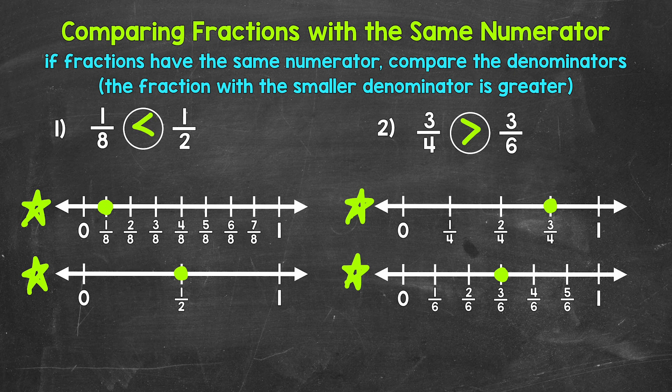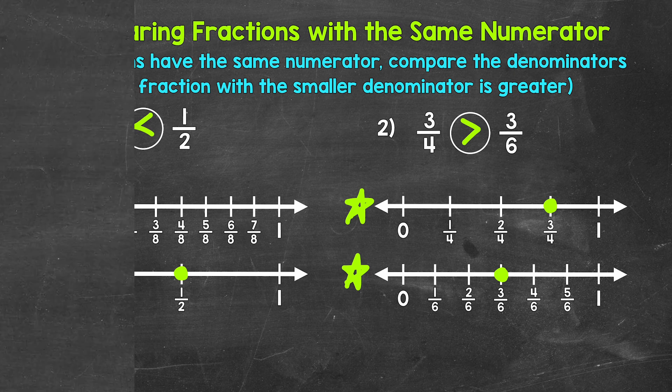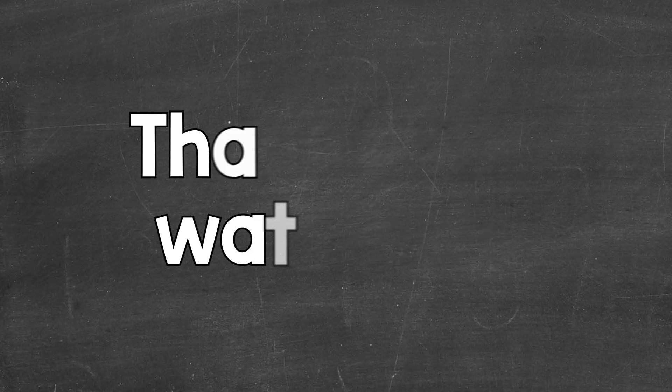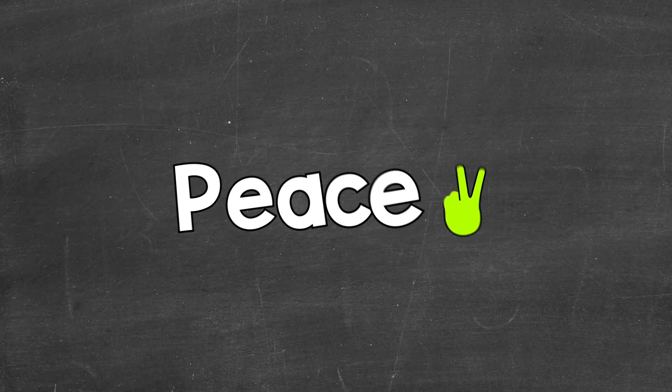So there you have it — that's how to compare fractions with the same numerator using number lines. Just remember, if fractions have the same numerator, compare the denominators. The fraction with the smaller denominator is greater. I hope that helped. Thanks so much for watching. Until next time, peace.